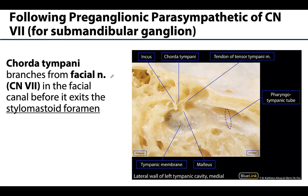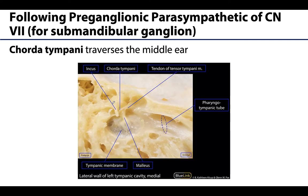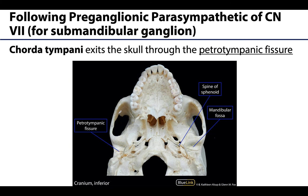The chorda tympani will actually branch from the facial nerve before the bulk of the facial nerve exits the stylomastoid foramen. This branch occurs within the skull in the facial canal, and from here the chorda tympani heads toward the middle ear region — similar to the tympanic nerve — so it does not exit through the stylomastoid foramen. The chorda tympani traverses the middle ear, passing between the malleus and the incus bone, which are two of the ear ossicles — the smallest bones of the body.